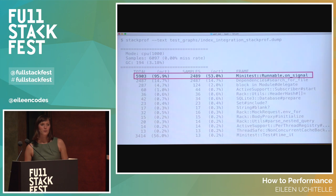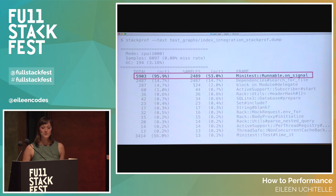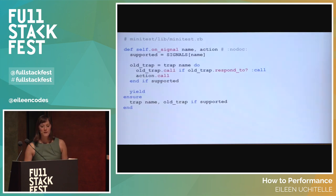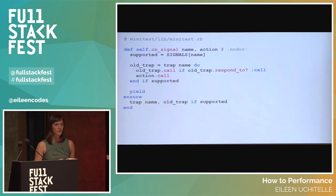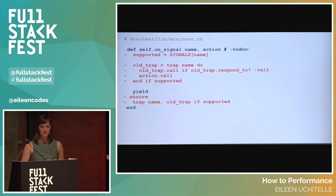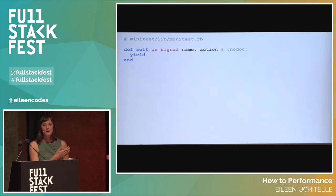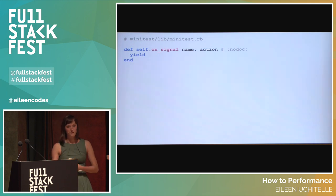Since StackProf output is sorted by most time spent at the top, we can focus on the top line which says we're spending 53% of our time in Minitest runnable on_signal. Let's take a look at that on_signal method — basically this method is just yielding. So if we want to make sure that method is actually slowing us down that much, we can just delete all the code and just yield. There's no way this is going to be the source of slowness in our code, because if it were another method yielding to it, that's the method we would see as spending the most time there. So if we run the StackProf script again, we can see that Minitest on_signal is no longer in our stack.